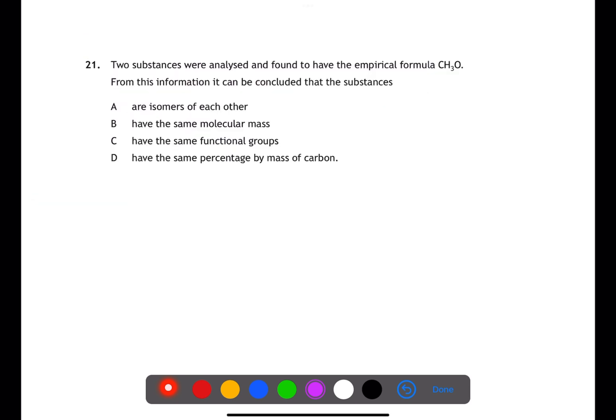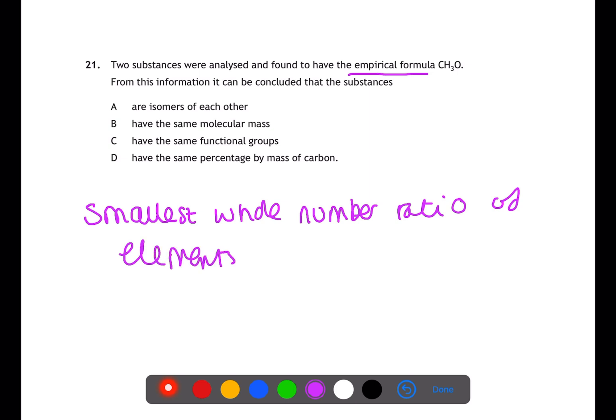Question 21 is testing your knowledge of empirical formula. Empirical formula is the smallest whole number ratio of the elements present within a compound. This means that the compounds have the same percentage mass of the elements present. However, one compound may have a larger multiple of the empirical formula for its actual formula. Therefore they are not isomers of each other and do not have the same molecular mass or functional groups.